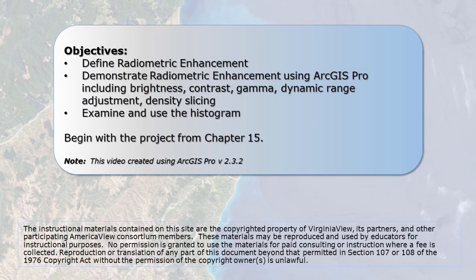This is the first of three chapters that cover the most widely used image enhancement techniques. This chapter demonstrates a radiometric enhancement using ArcGIS Pro. In chapters 18 and 19, we cover spatial and spectral enhancement. Image enhancement is processing of remotely sensed imagery to adjust display brightness values, thereby improving the image's visual qualities to support the purpose of a particular analysis for a project.